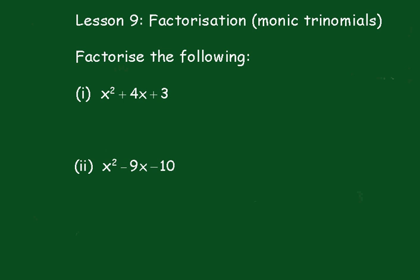And we say what two numbers multiply together to give me 3, this number, and add up to give me 4. That's a fairly easy one, seeing 3 is a prime number anyhow, so it's only 3 and 1.